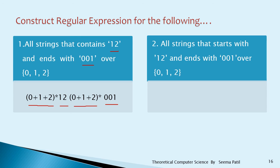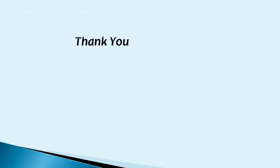All strings that start with 12 and end with 001 over {0, 1, 2}: it starts with 12 so write 12 first. It ends with 001 so write 001 at the end. In between there can be any number of 0, 1, 2. The regular expression is 12(0 + 1 + 2)*001. Thank you.